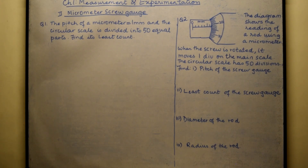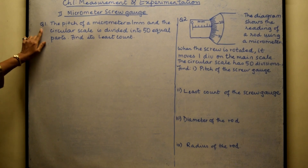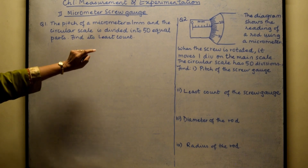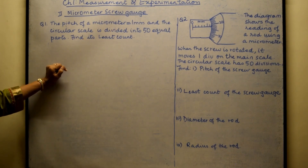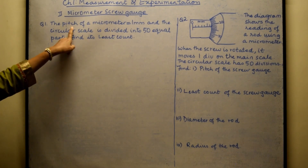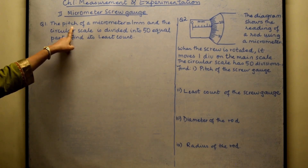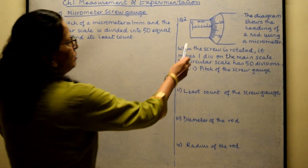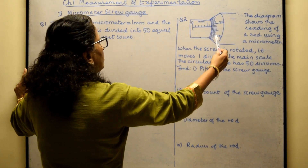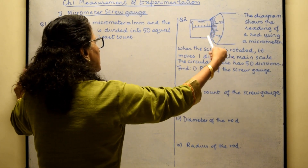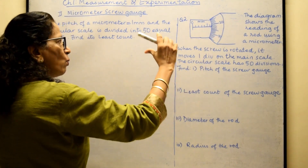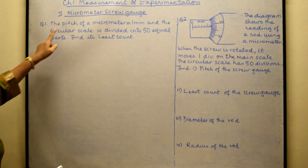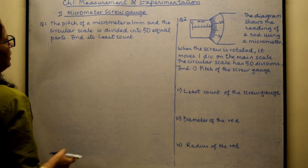The first numerical you can be asked is based on the pitch of the micrometer, which is given as one millimeter. The pitch is the linear distance traveled on the main scale. As you can see in the diagram, there is a main scale, and when the circular scale is rotated by one complete rotation, the linear distance it travels becomes the pitch of the micrometer.